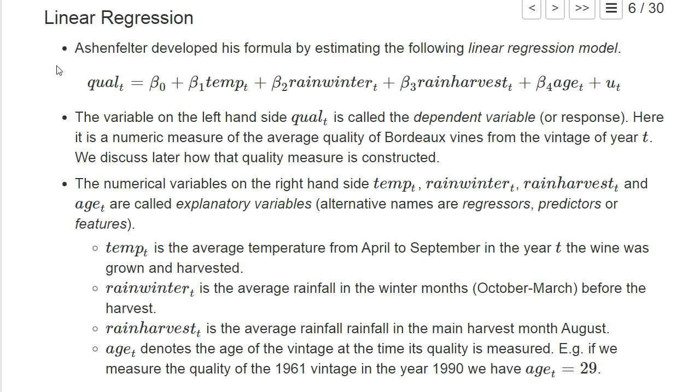He has a dependent variable on the left-hand side which measures the quality of a vintage, and this will be derived from the auction prices of the wines. We will come back later to how this variable is exactly computed.